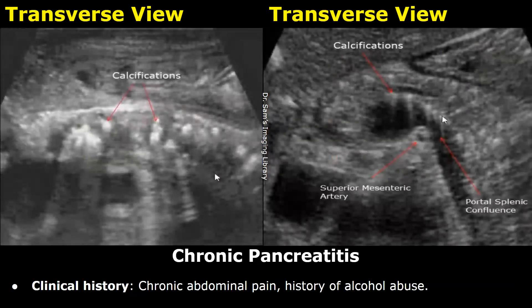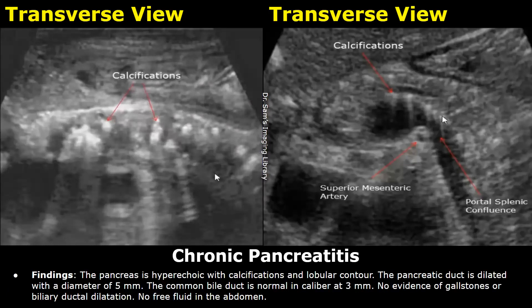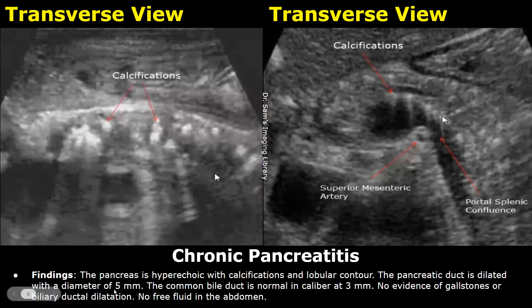Now we move on to chronic pancreatitis. The clinical history in this case was chronic abdominal pain and history of alcohol abuse. In the findings for chronic pancreatitis, you can write: the pancreas is hyperechoic with calcifications and lobular contour. After that, you can write whether the pancreatic duct is dilated or not — in this case it was dilated with a diameter of 5 millimeters.